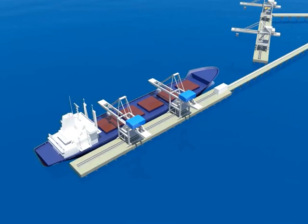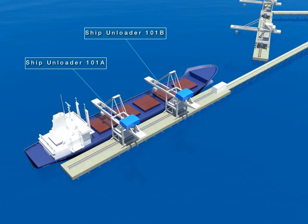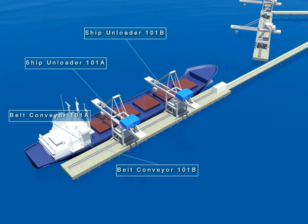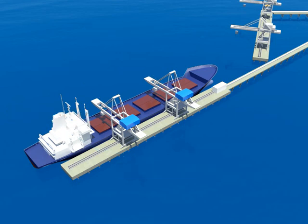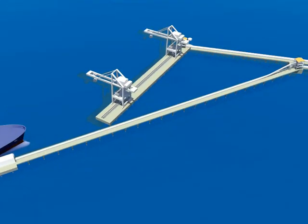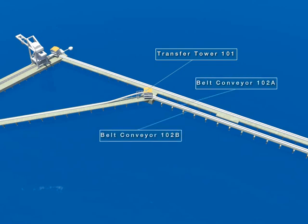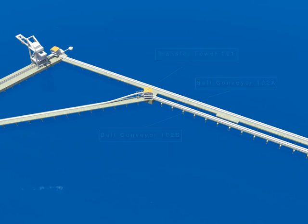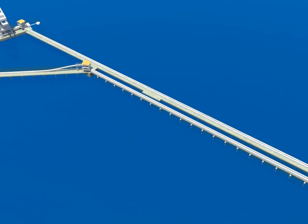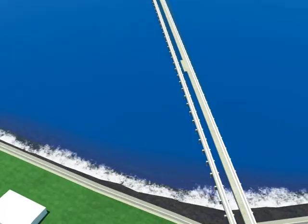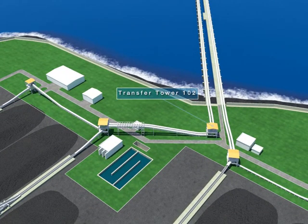The coal which has been unloaded from Ship Unloader 101A or 101B of 1,500 tons per hour capacity goes to Transfer Tower 101 through Belt Conveyor 101A or 101B. After separating pieces of iron at the Magnetic Separator 101A or 101B, they are sent up to Transfer Tower 102 after the weight is measured at Belt Conveyor 102A or 102B.